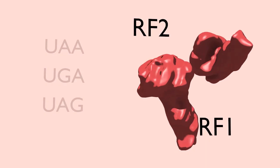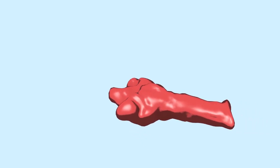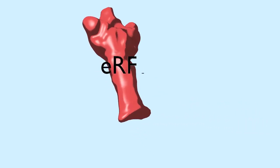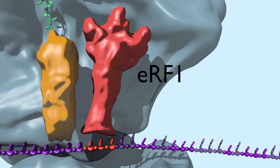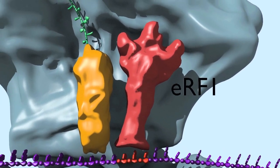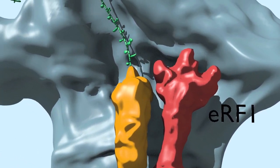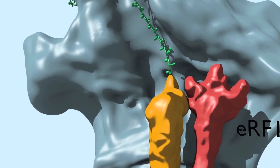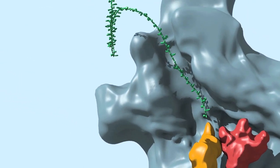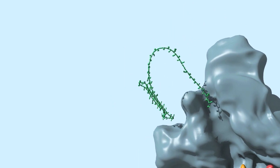In eukaryotes, there is a single factor, eRF1, that recognizes all three stop codons. The reaction that is catalyzed is a hydrolytic one, wherein the growing polypeptide is released from the peptidyl tRNA, resulting in the termination of protein synthesis.